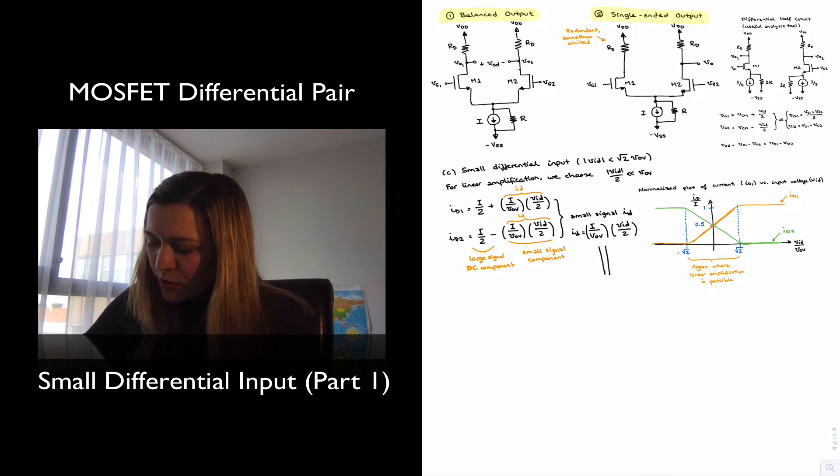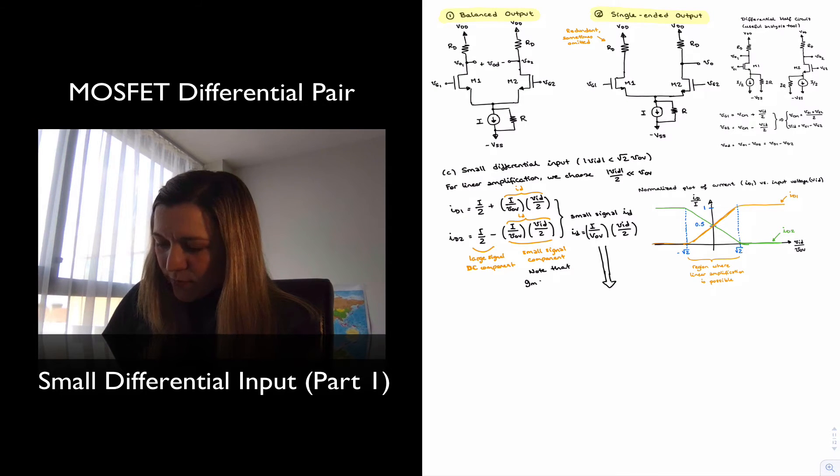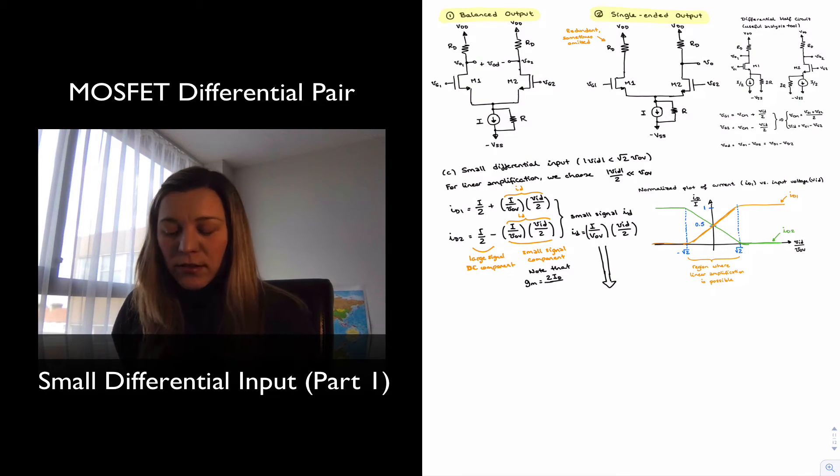Now, if we recall, the expression for the transconductance of a transistor, so note that GM was equal to two times the quiescent drain current divided by the overdrive voltage. And we can see how that expression resembles somewhat the expression for ID there. We have I divided by VoV. We don't have a two term. However, you can notice that ID is the drain current through each one of the transistors and I is the tail current. And they're related in that the tail current is equal to twice each one of the quiescent drain currents. And so two ID, that term over there, that is on the numerator of the expression for GM, two ID is actually equal to the tail current.